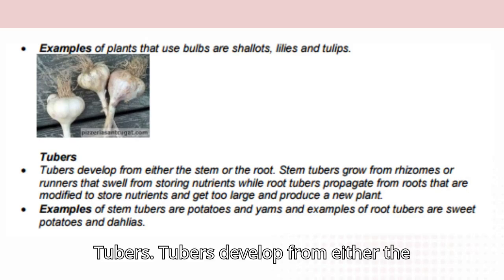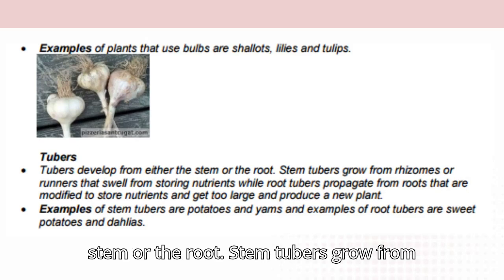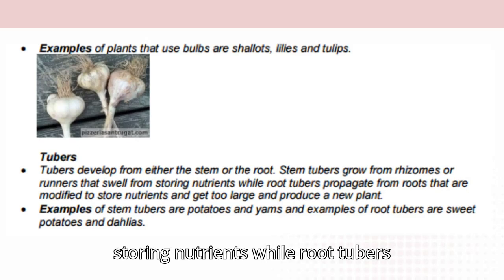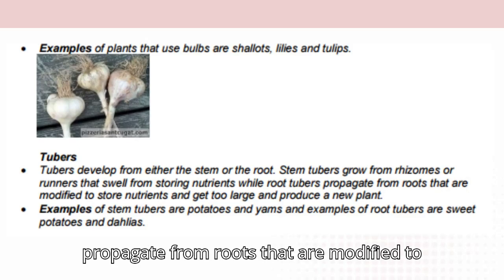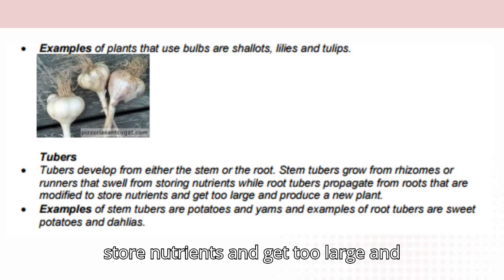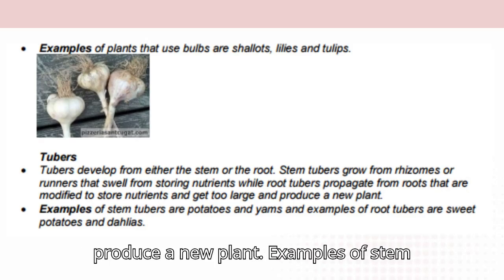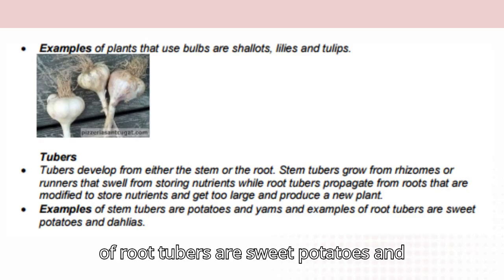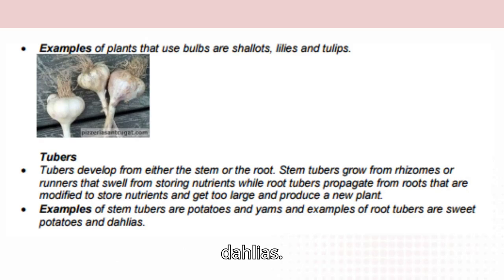Tubers: tubers develop from either the stem or the root. Stem tubers grow from rhizomes or runners that swell from storing nutrients, while root tubers propagate from roots that are modified to store nutrients, eventually getting large enough to produce a new plant. Examples of stem tubers are potatoes and yams, and examples of root tubers are sweet potatoes and dahlias.